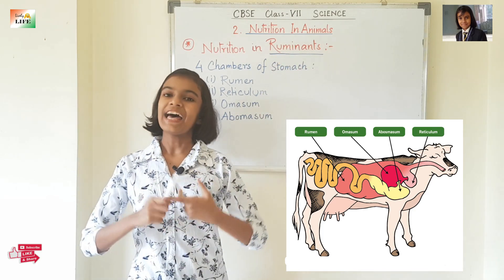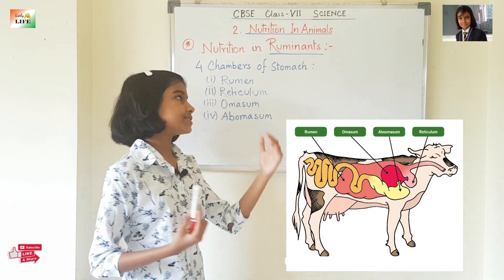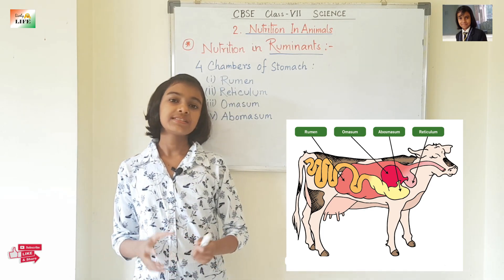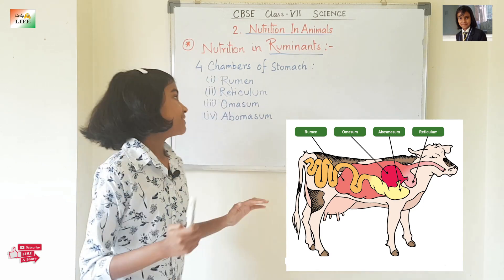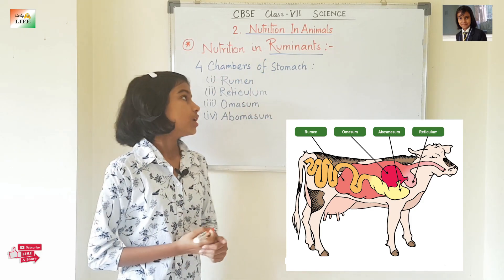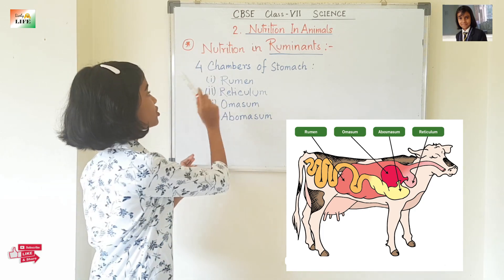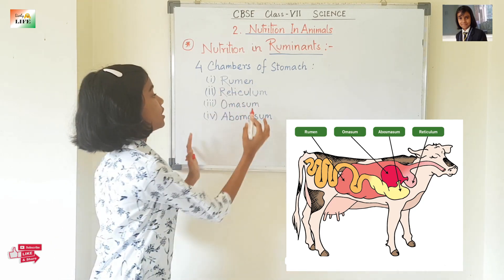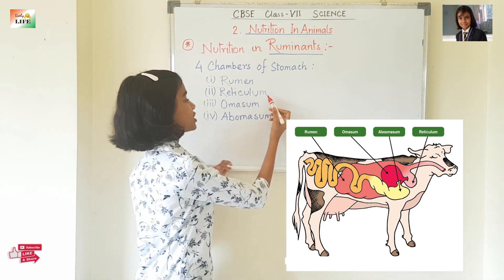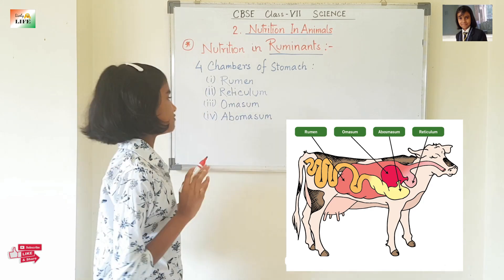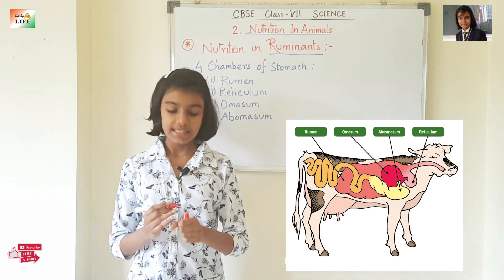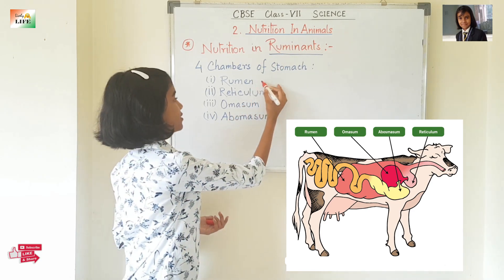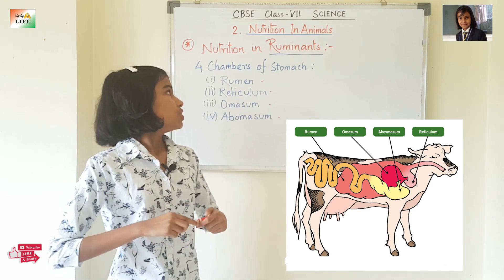Ruminants are known as ruminants because they can digest cellulose. Their digestive system is almost the same as the human digestive system, but with certain changes. They have four chambers in their stomach: rumen, which is the largest chamber; reticulum; omasum — where reticulum and omasum also act as a food pipe; and abomasum, which is the true or real stomach of the ruminants.